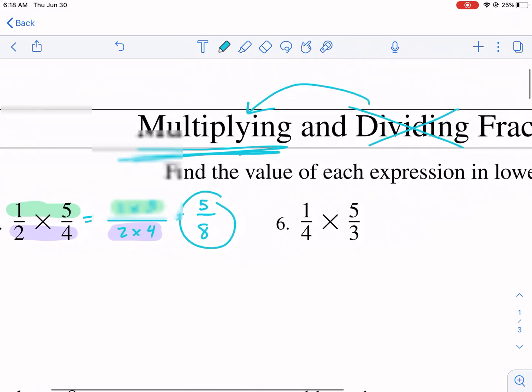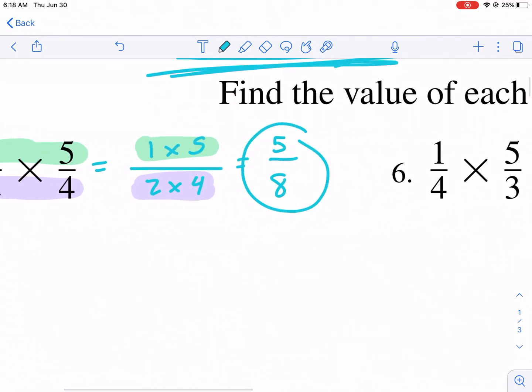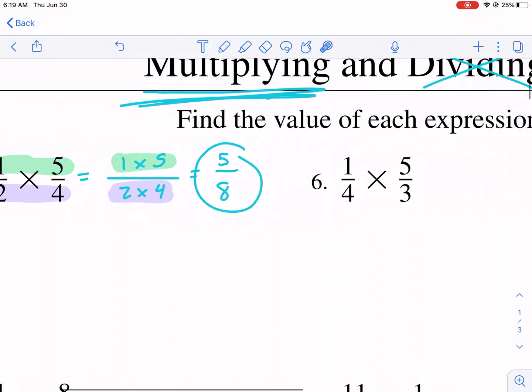It does say that we need to express in lowest terms. What does that mean? That means if our numerator and denominator share any factors. For example, the factors of five are five and one. The factors of eight are eight and one, four and two. If they share any factors, then that means we need to divide by those common factors. They don't for this example. So we're all set. That's in lowest terms. But that is the process.